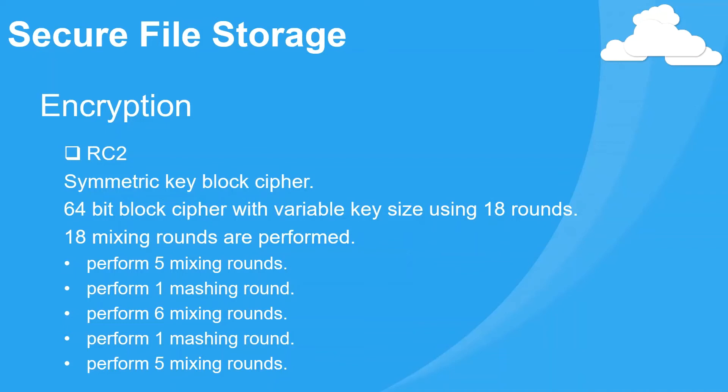For RC2: in cryptography, RC2 is a symmetric key block cipher with a 64-bit block size and variable key size, using 18 rounds. The 18 mixing rounds are performed with shuffling. Stage 1 performs 5 mixing rounds, stage 2 performs 1 mashing round, stage 3 performs 6 mixing rounds, and stage 4 performs 1 mashing round.